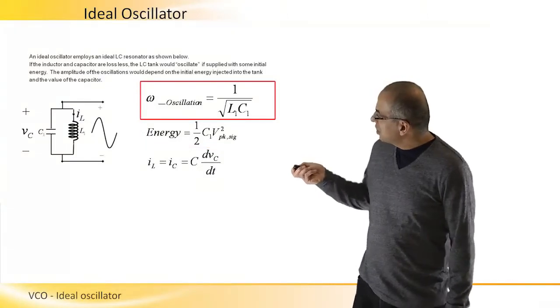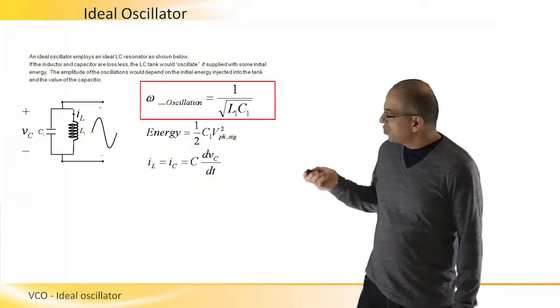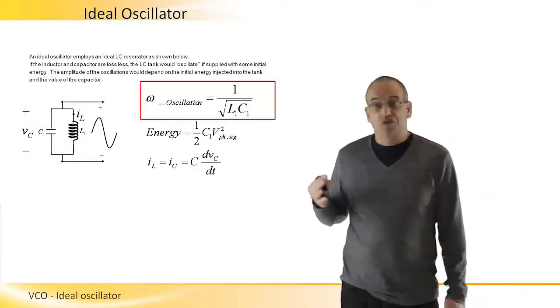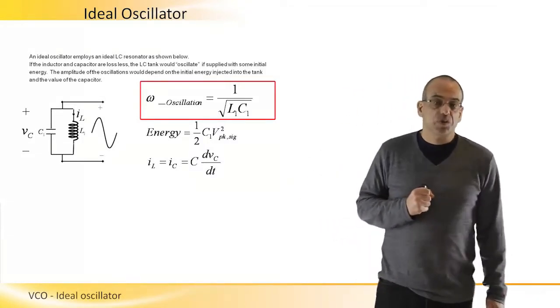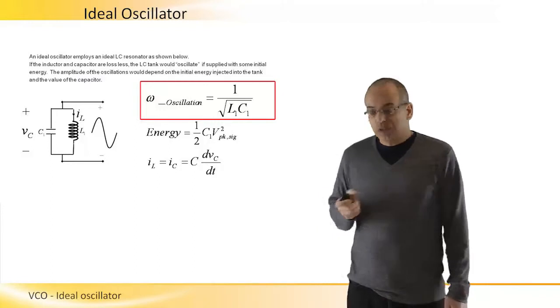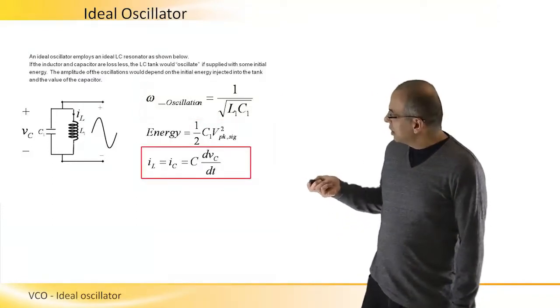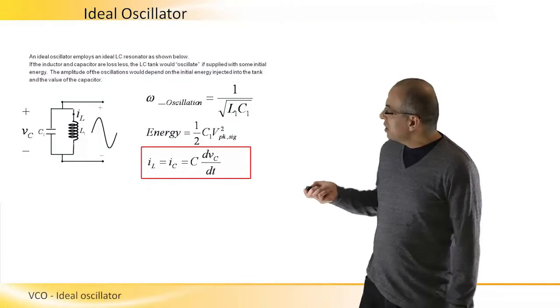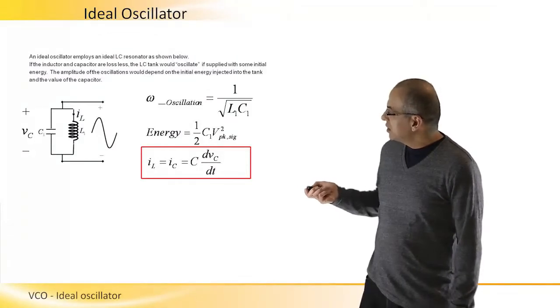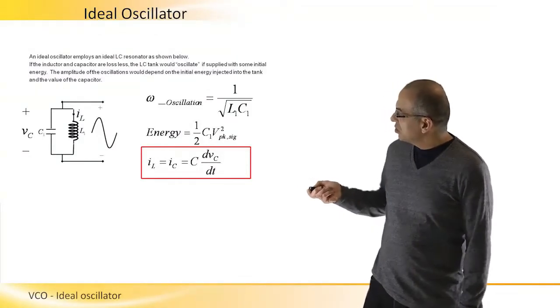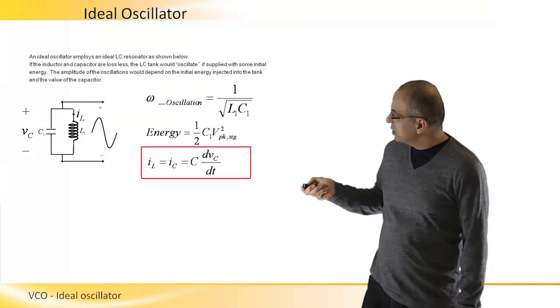The frequency of oscillation would be one over square root LC, which is a very well-known expression. And of course the inductor current will be equal to the capacitor current because there's no current coming in or out of the tank.